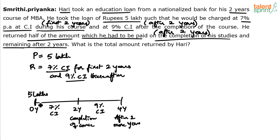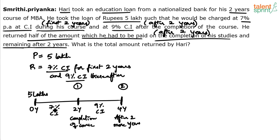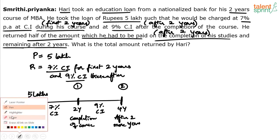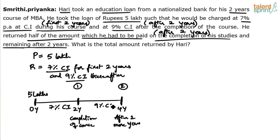You know how compounding works. He is paying in two parts — one at two years and the second at four years. He borrowed five lakhs in the beginning. Now, at the end of two years, if you are being charged 7% per annum compound interest, what will be the total interest? Go by the effective percentage concept: A plus B plus AB by 100. For two years at 7%, it is 7 plus 7 plus 7×7/100, which gives 14.49%.